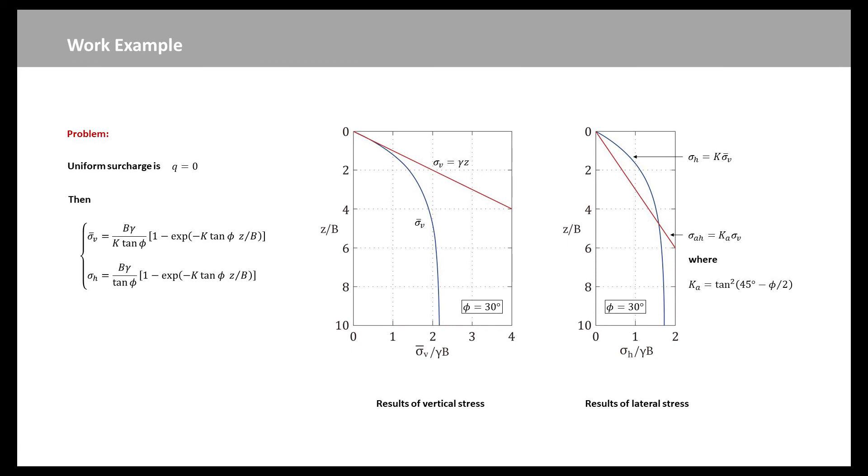When the depth z is increased as very deep, the stresses of the current theory converge to fixed magnitudes. For z equal to infinity, we obtain the new stress equations. The vertical stress sigma-v bar is equal to gamma times b over k over tangent phi. The lateral stress sigma-h is equal to gamma times b over tangent phi.